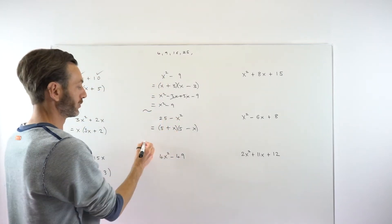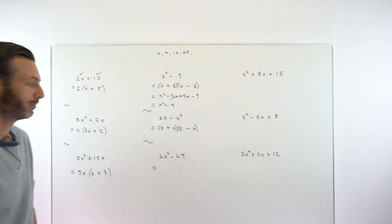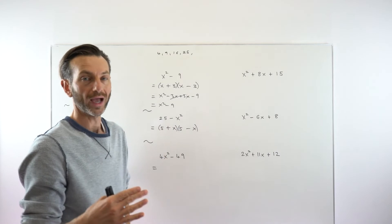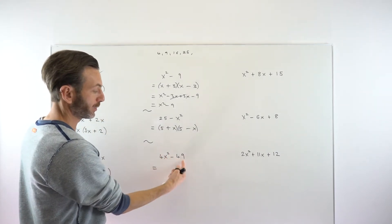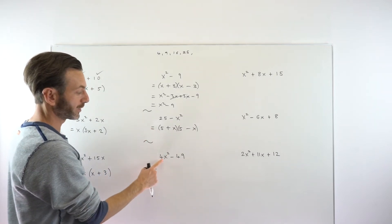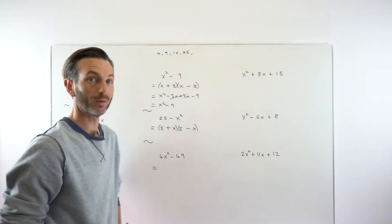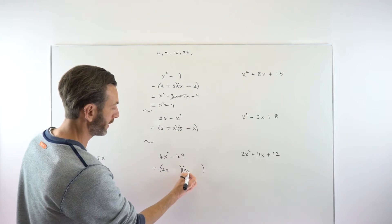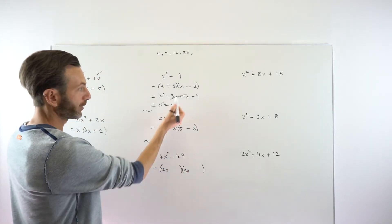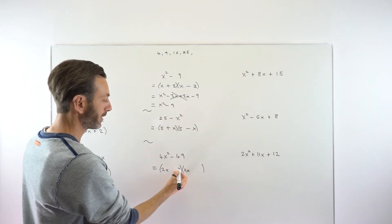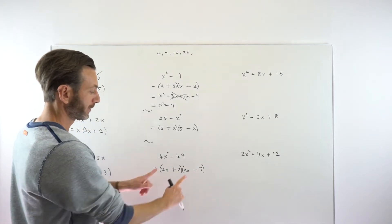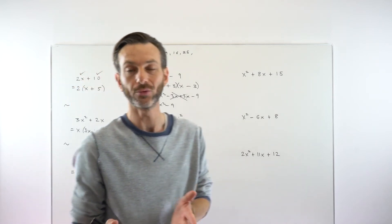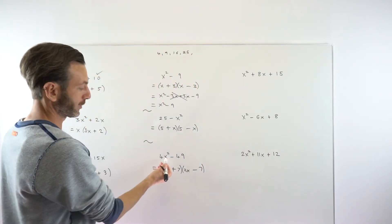The last difference of squares example is a little more complicated: 4x² − 49. Here 4x² is (2x)², and 49 is 7². As long as both terms are something squared, it still works. The two brackets each get 2x — you can never have 2x and 3x because you need that middle-term cancellation. Then 7 and 7, with one plus and one minus. Expanding confirms: +14x and −14x cancel, leaving 4x² − 49.